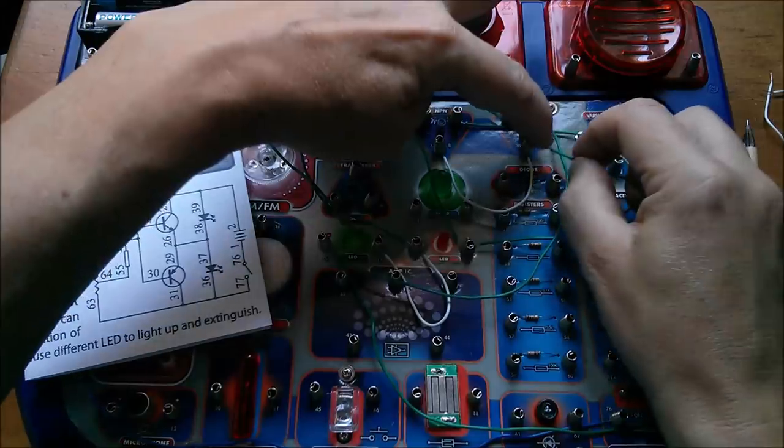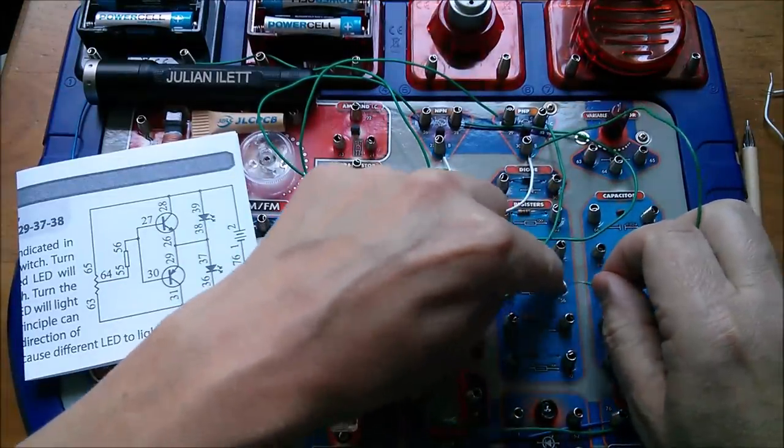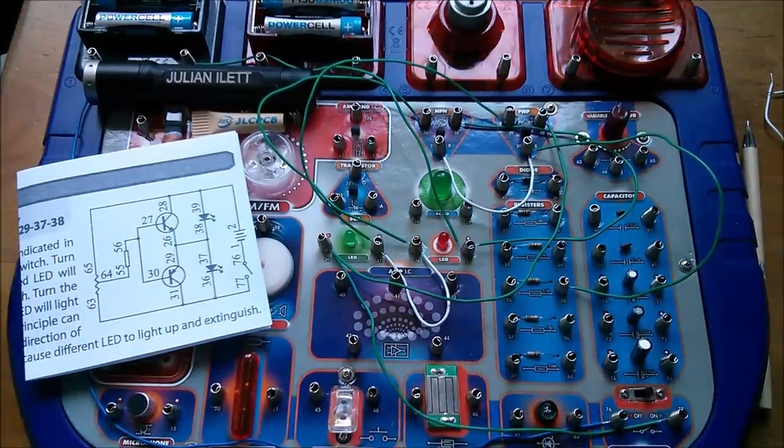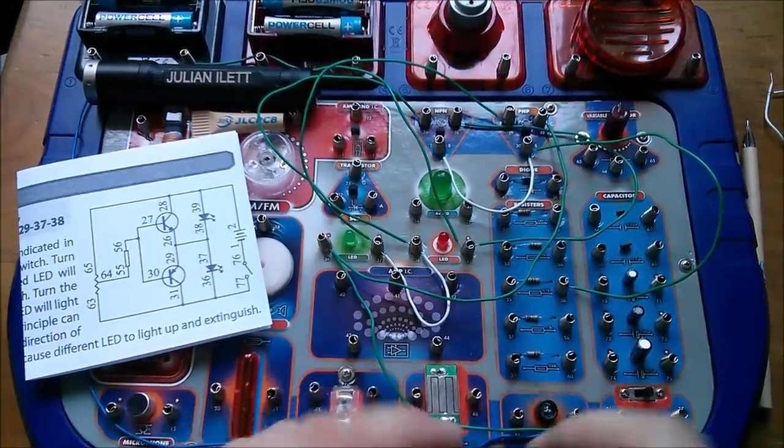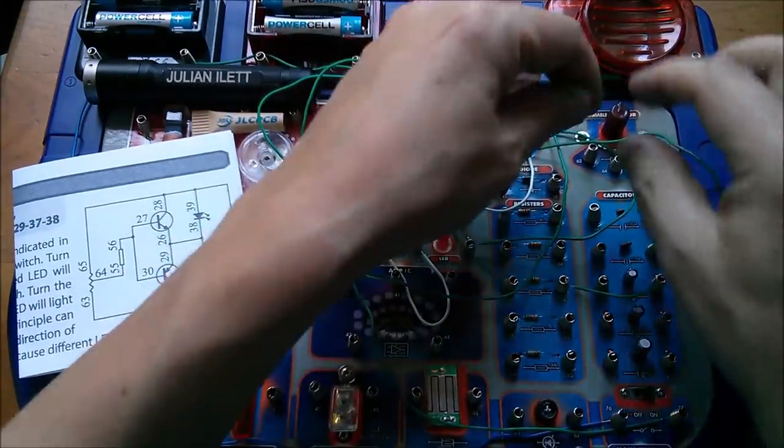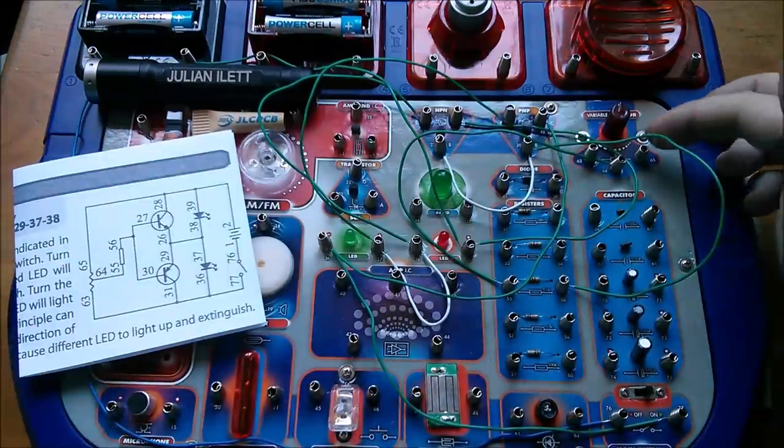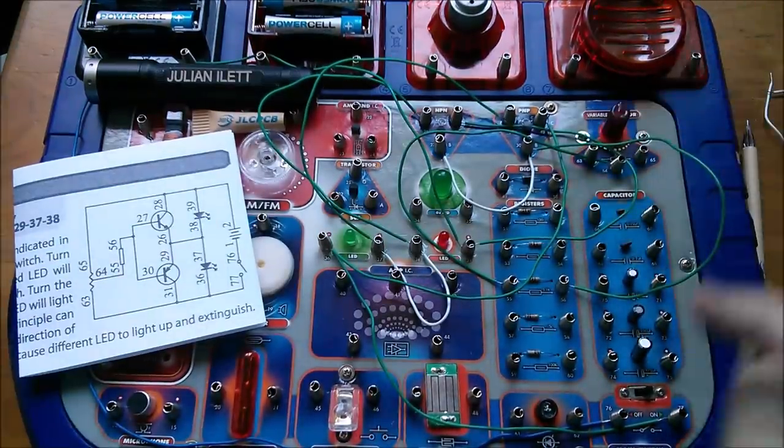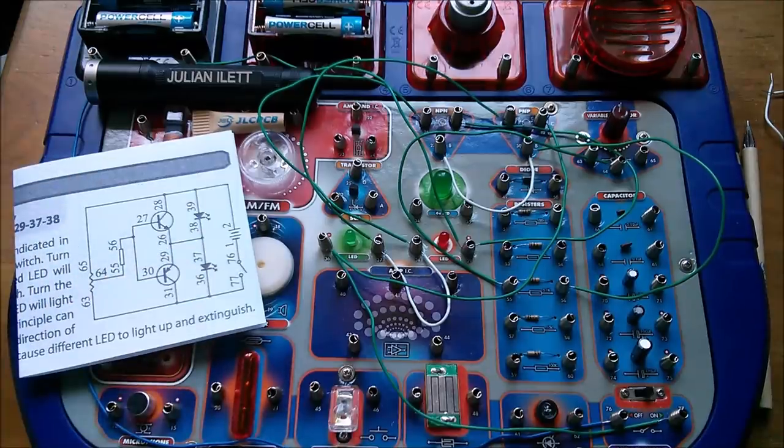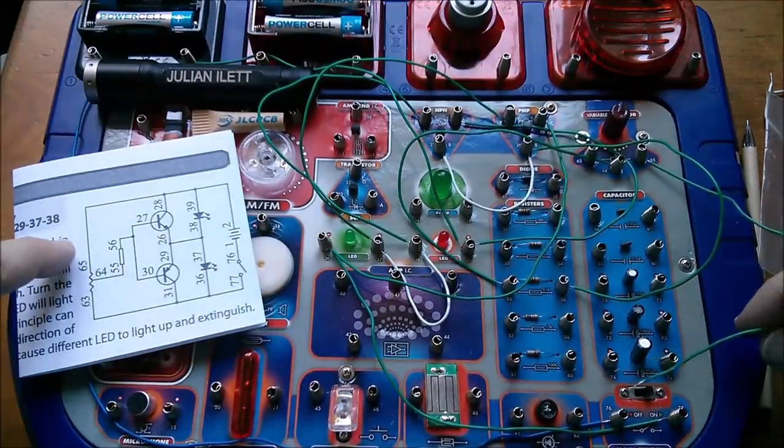That point goes to that 5.1k resistor, so that goes to 56. Yeah that's right, 55 goes to the center of the pot. And then it's a question of attaching the two outer terminals of the pot to positive and negative of the battery. Let's do this logically: 65 goes to positive. Now we can turn the green one on.